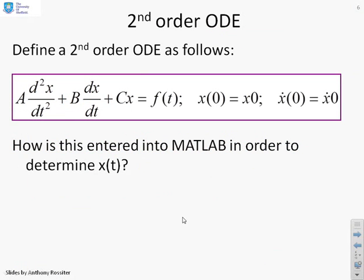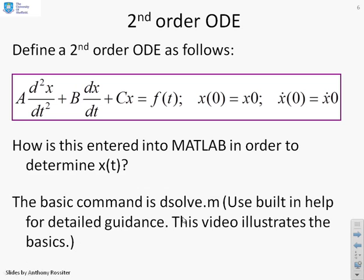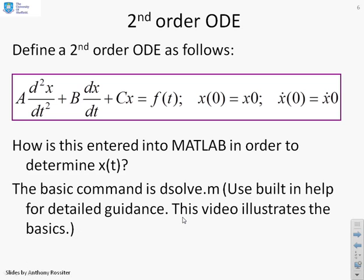A second order ODE then. Here's an example. A d²x/dt² plus B dx/dt plus Cx equals f(t). And I've given some initial conditions. x(0) equals x0, x dot of 0 equals x dot 0. How do we enter this into MATLAB and determine x(t)? And again, a reminder, please use the built-in help for more guidance than I'm giving here.